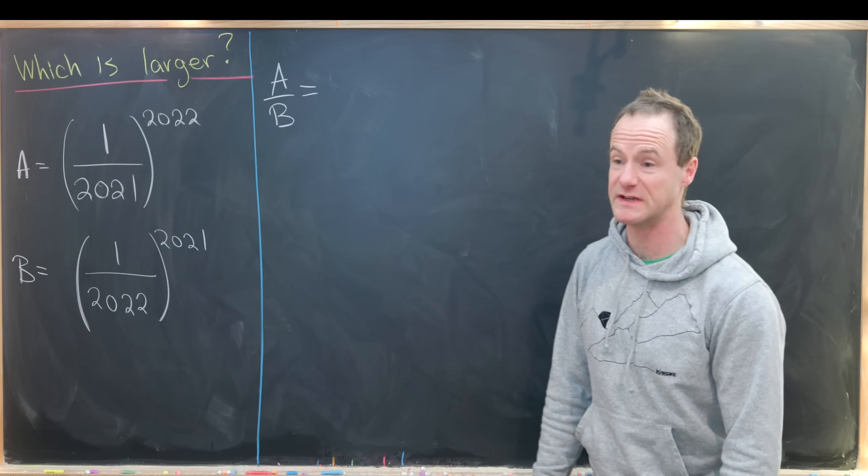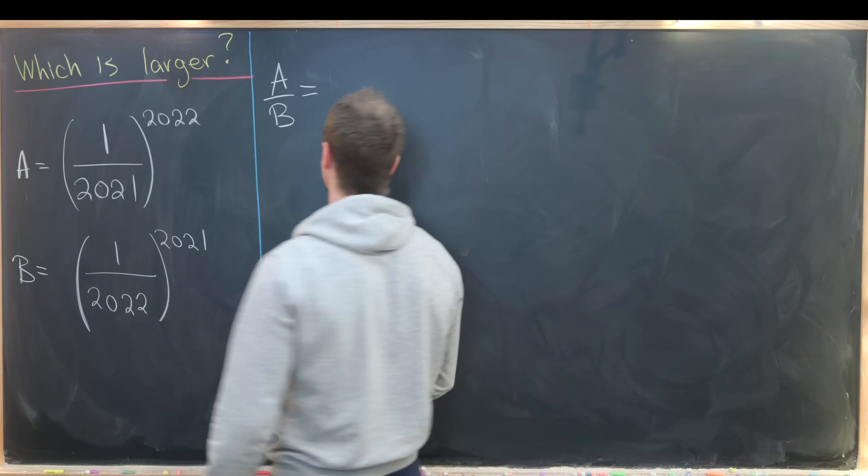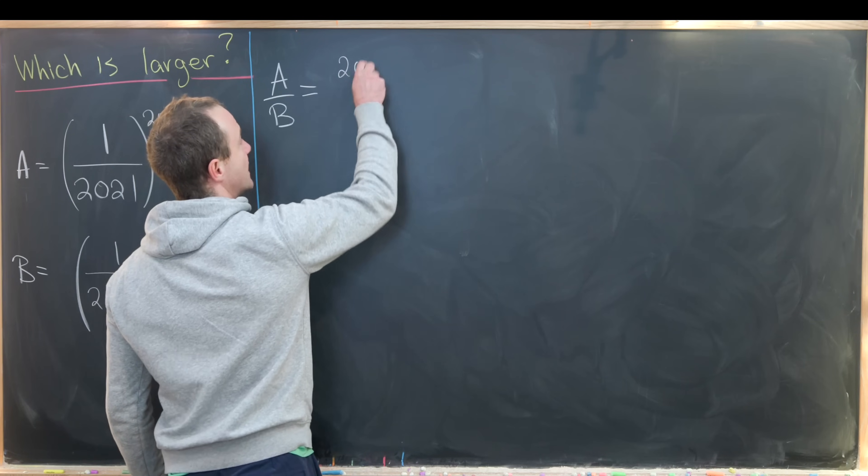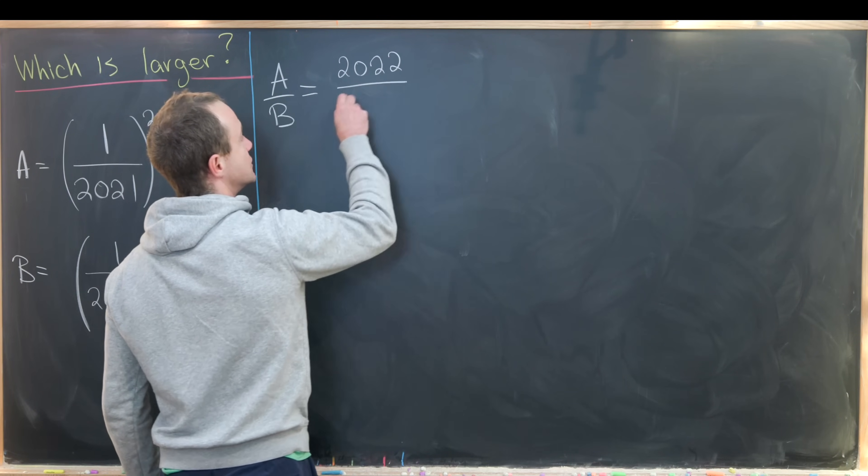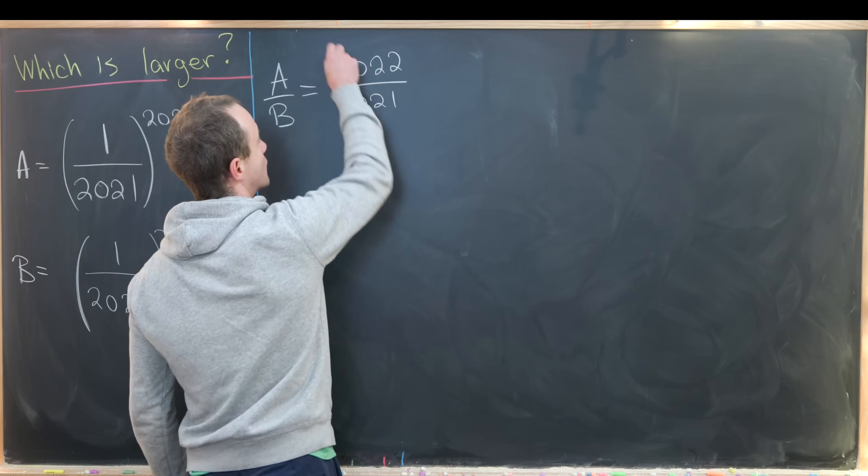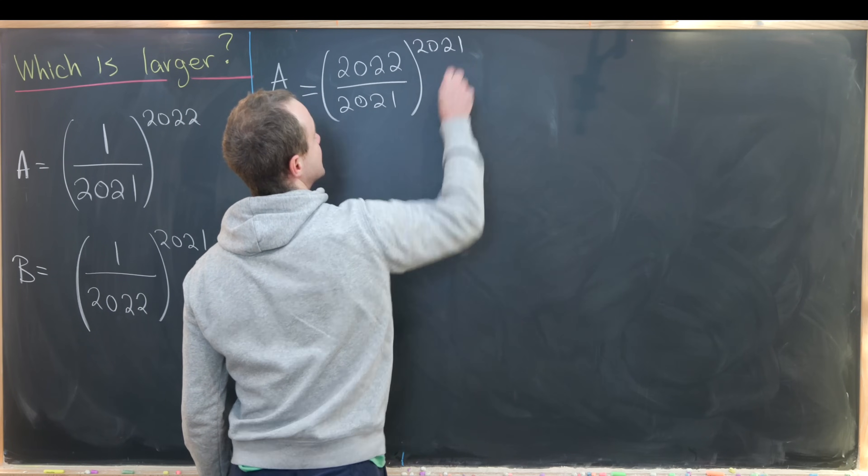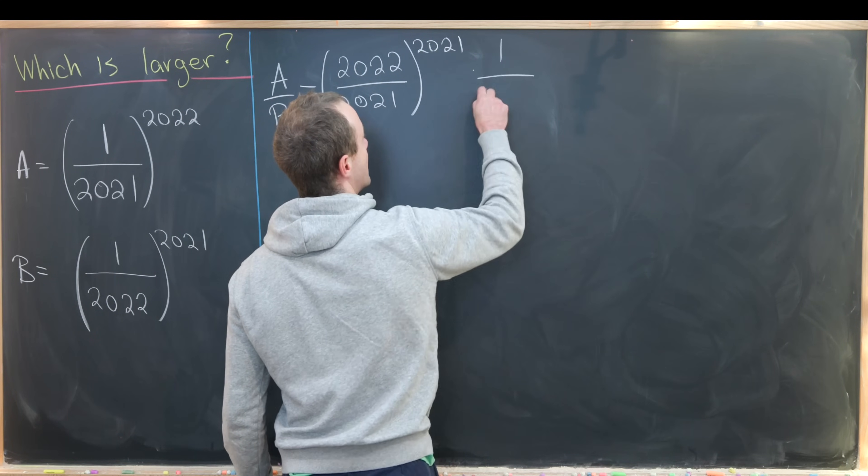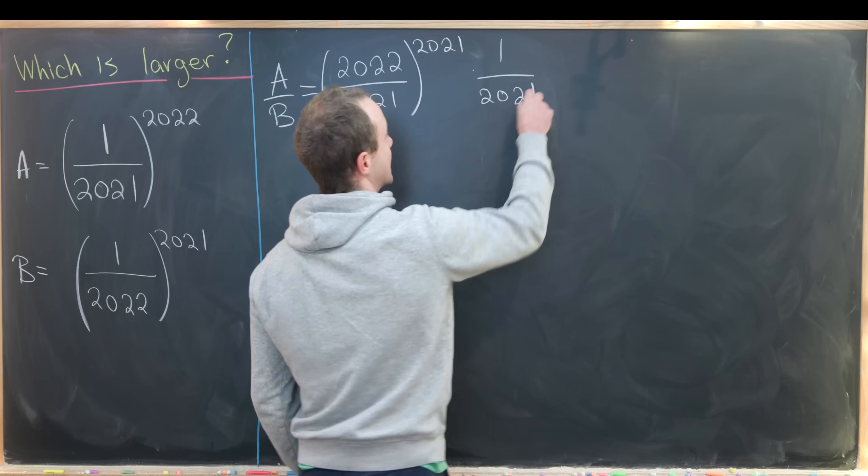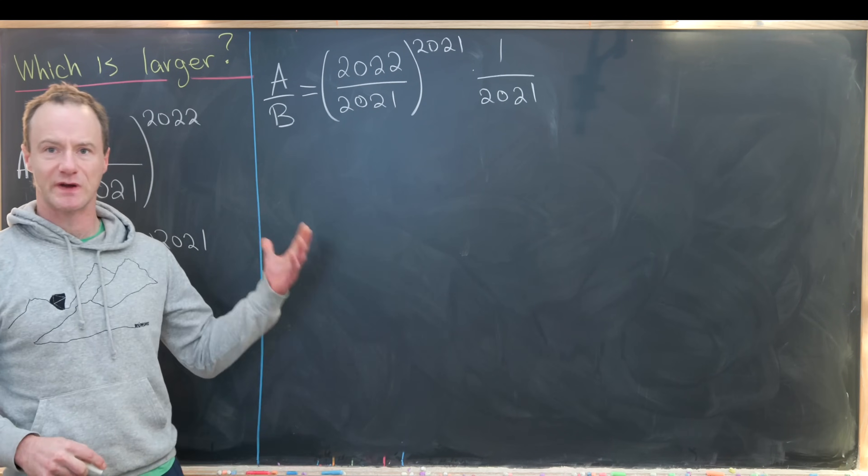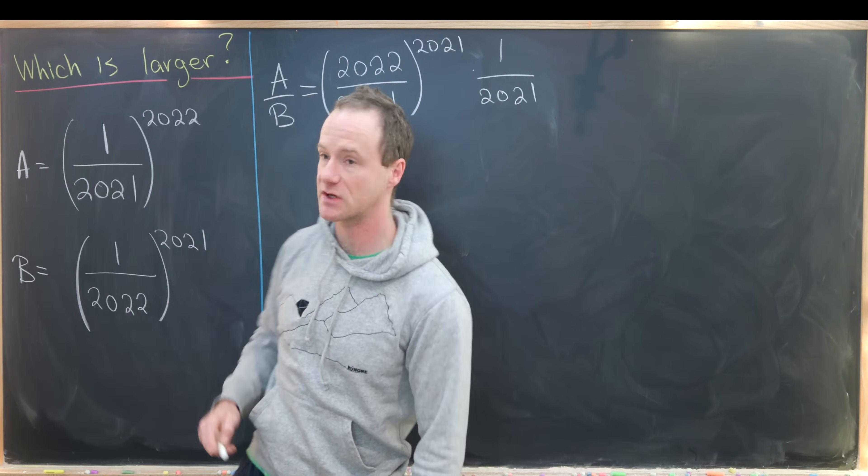Now keeping in mind the arithmetic of rational numbers, after doing a bit of simplification we end up with 2022 over 2021 to the 2021 power times 1 over 2021. I smashed some things together when I took this quotient.